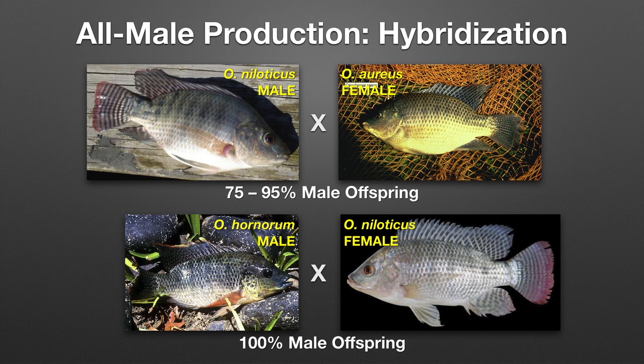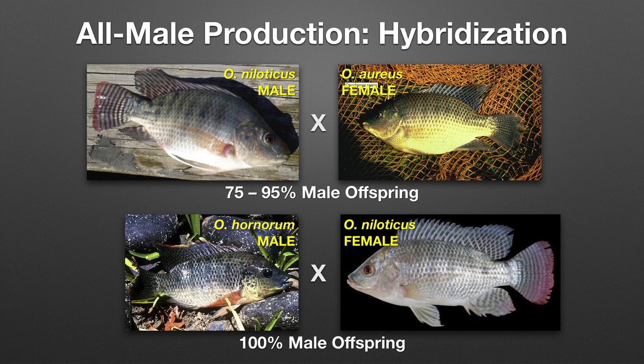The second technology used in all-male production is hybridization. Depending on which species you cross, it is possible to produce all-male offspring. Crossing an Oreochromis niloticus male with an Oreochromis aureus female results in 75 to 95 percent male offspring. Another hybrid using Oreochromis hornorum and Oreochromis niloticus is reported to yield 100 percent male offspring; however, there are many problems with hybridization in terms of species integrity, genetic constitution, and variability in the percentage of males produced.